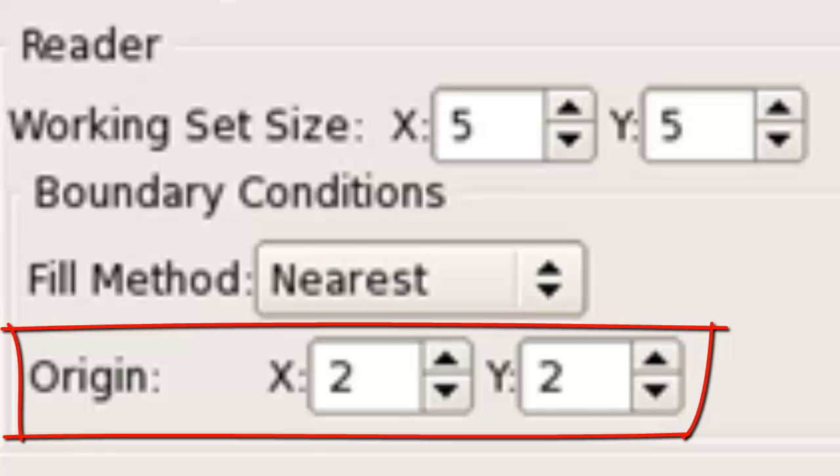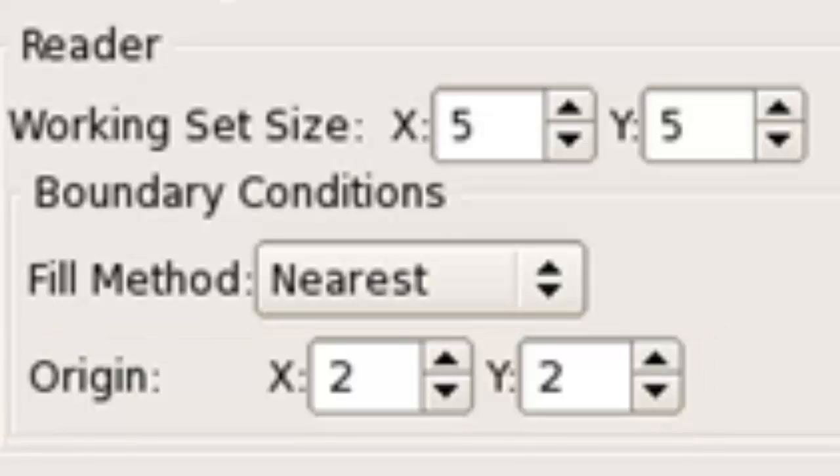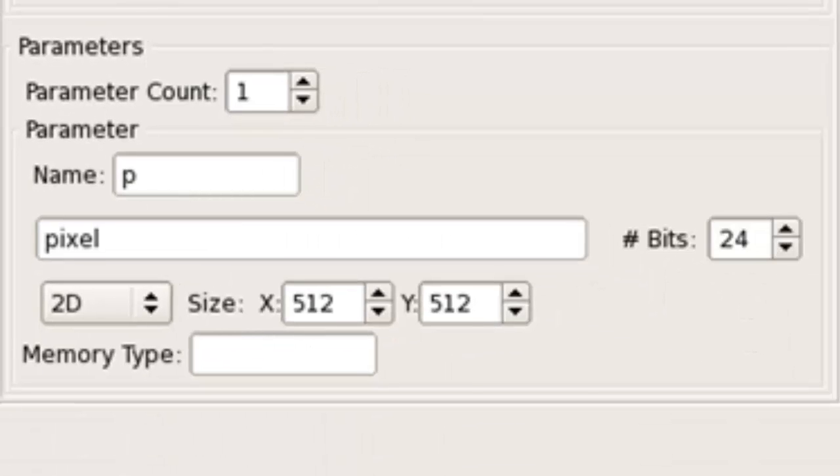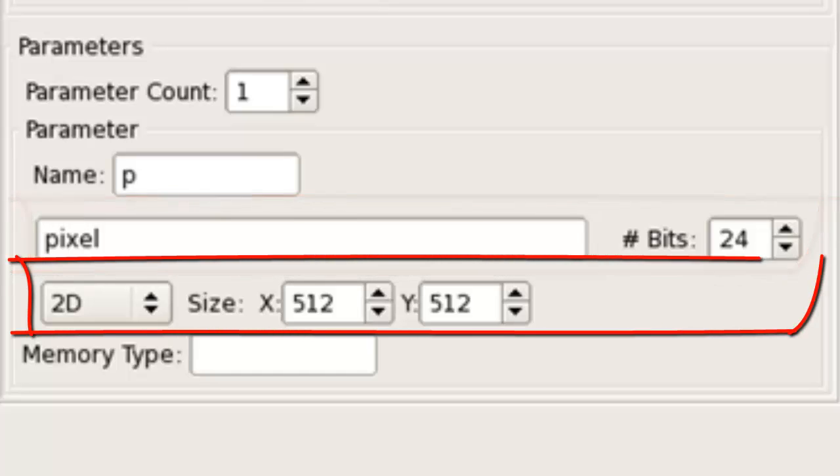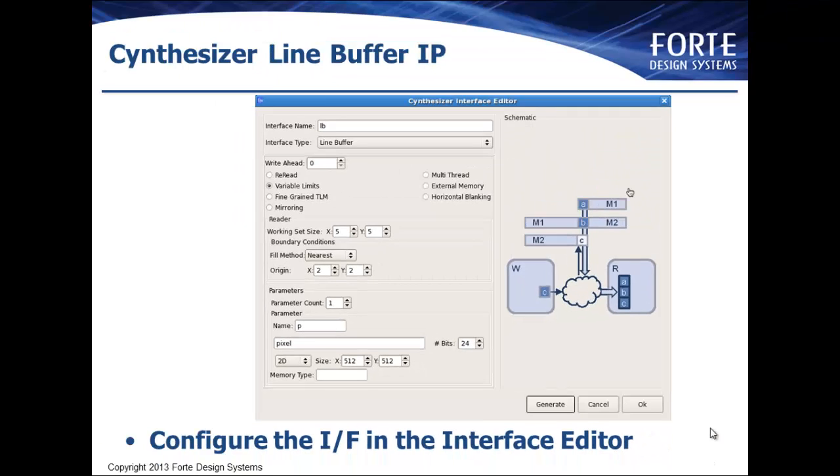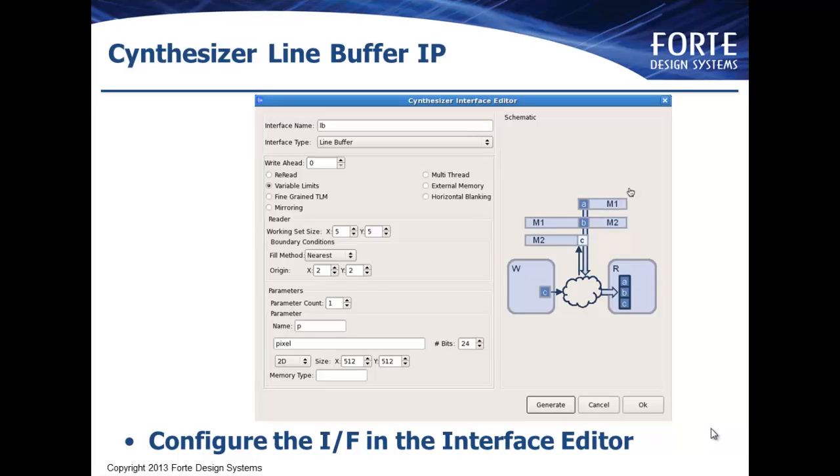The origin defines the coordinates of the focus pixel in the working set. In our case, this is set to 2,2, which is the center of the working set matrix. The parameter defines the shape of the overall image itself. In this case, the image comprises data of type pixel, which is 24 bits wide and the image size is set to 512 by 512. Once all these settings are defined, pressing generate will generate a System C class that represents your line buffer. Simply connect this up in your design and begin calling the API functions provided to get a working set.